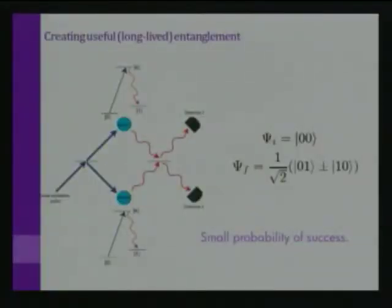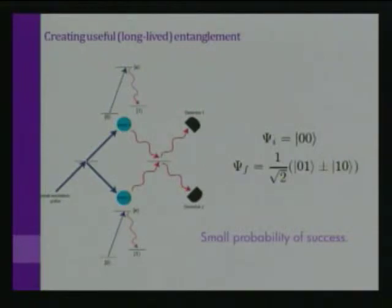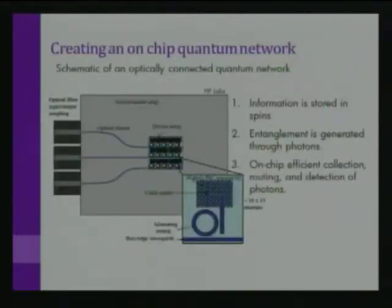This type of free-space system has a very small probability of success. Groups are working on demonstrating this with single ions, and they will demonstrate this entanglement probably within the next year or so, with hours and hours of integration for two entangled bits. It will be exciting. But long term, we want to do better, and the way we'll do that is by integrating everything onto a chip. Information is stored in spins, entanglement is generated through photons, so we need on-chip efficient collection, routing, and detection of photons — ideally 100% detection efficiency.